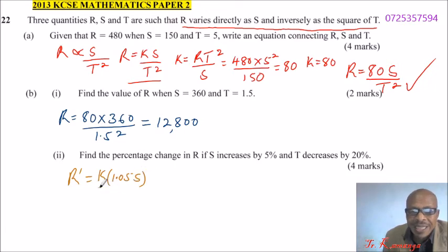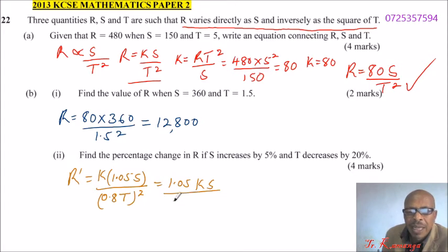S has increased by 1.05, that is 105 divided by 100, and T has decreased by 20%, so it will be 0.8 or 80 over 100 of the old T, and this is squared. Now you have 1.05 times K times S divided by when you square 0.8 you get 0.64 times T squared.